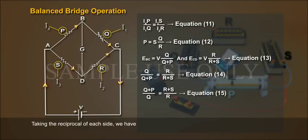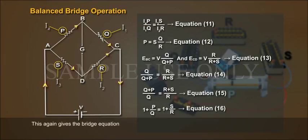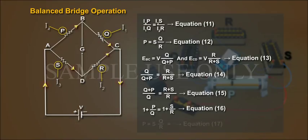Q plus P by Q equals R plus S by R, Equation 15. Or, 1 plus P by Q equals 1 plus S by R, Equation 16. This again gives the bridge equation: P equals S times Q by R, Equation 17.